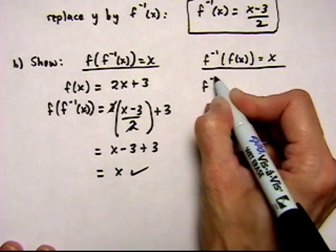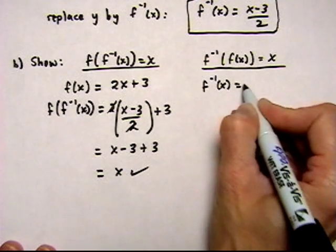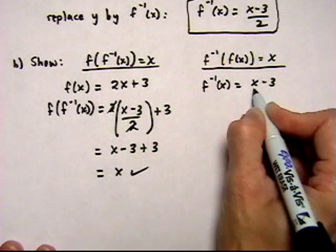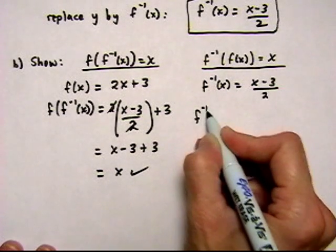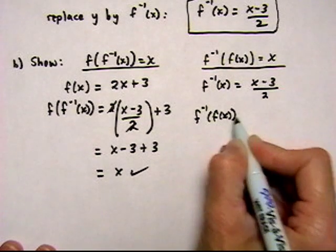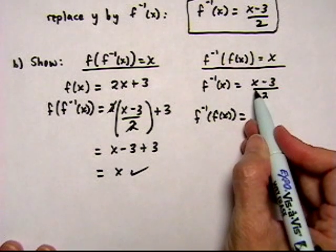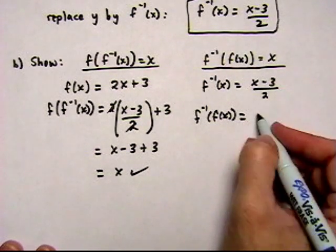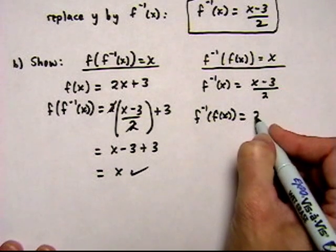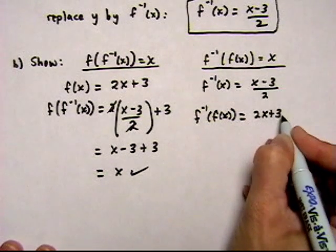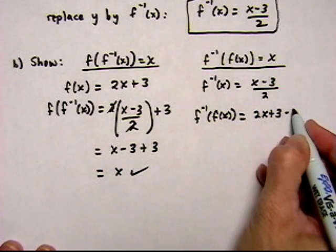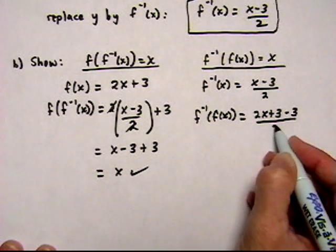Starting with f inverse, which is equal to x minus 3 over 2. We now want f inverse of f(x). So in place of x, we're going to put the original f(x). 2x plus 3. And then bring down the minus 3. And it's all over 2.